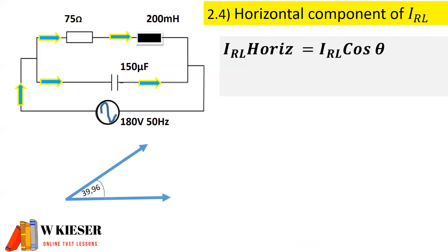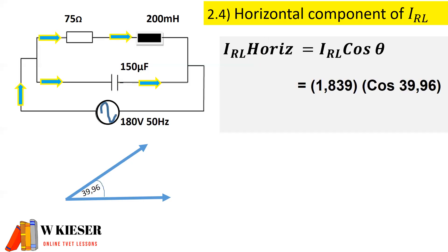In part 4 of question 2 we need to determine the horizontal component of the current flowing in the inductive branch. To calculate the horizontal component it is I multiplied by cos theta. Substituting the phase angle of 39.96 degrees, therefore the horizontal component of the current is 1.409 amps.